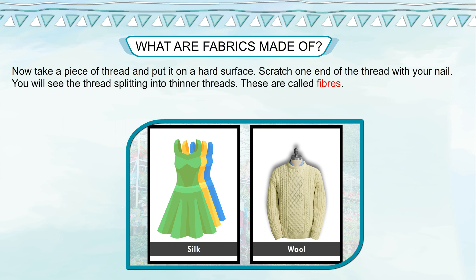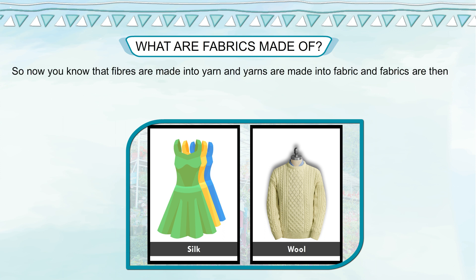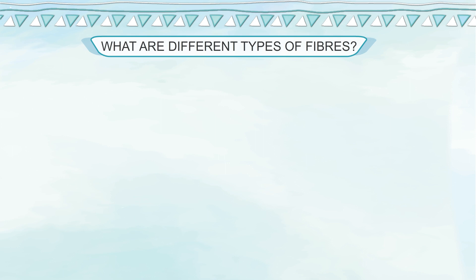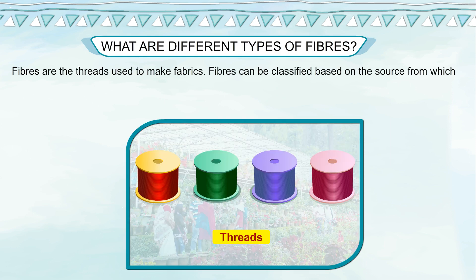Now take a piece of thread and put it on a hard surface. Scratch one end of the thread with your nail — you will see the thread splitting into thinner threads. These are called fibers. So now you know that fibers are made into yarn, yarns are made into fabric, and fabrics are then cut and stitched into clothes. In other words, fiber is the basic unit of fabric.